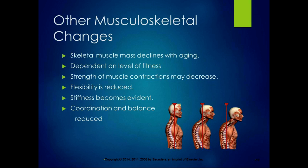Other musculoskeletal changes with aging: skeletal muscle mass declines, though it's dependent on your level of fitness — you don't have to go quietly, you can go kicking and screaming. The strength of muscle contractions might decrease, flexibility is certainly reduced and people become more stiff, and coordination and balance are reduced. The two things we all need to work on for the rest of our lives are balance and posture.